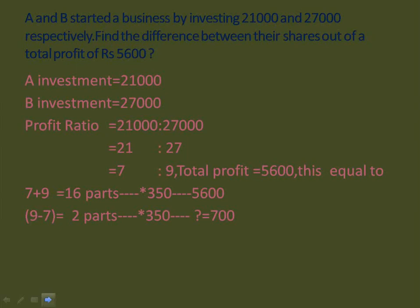A and B started a business by investing 21,000 and 27,000 respectively. Find the difference between their shares out of a total profit of 5,600. No period is mentioned so we take one year. Profit ratio equals investment ratio: 21,000 is to 27,000, that is 21 is to 27. Upon cancellation, 7 is to 9. Total profit 5,600 equals 7 plus 9, that is 16 parts. The difference between shares is 9 minus 7 equals 2 parts. 16 parts are 5,600, so each part is 350, and 2 parts are 700.